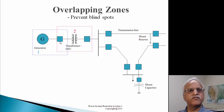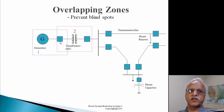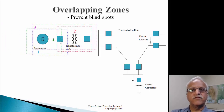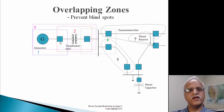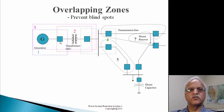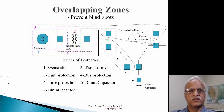As an example, if there is a fault within the generator breaker, both the generator protection and the transformer protection operate and isolate the faulted equipment. Looking at the previous slide, you will see there is no area without overlap - no zone that does not follow this overlapping rule.